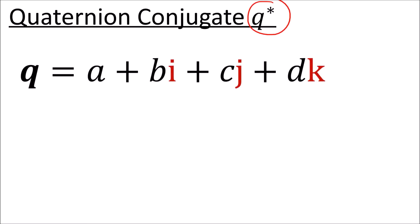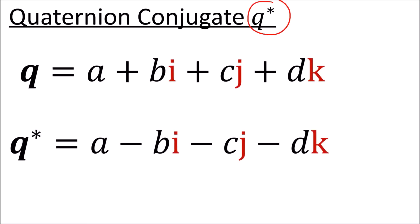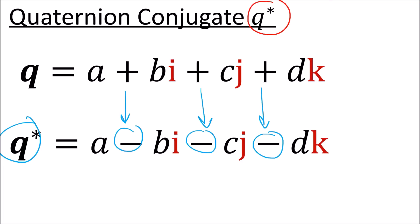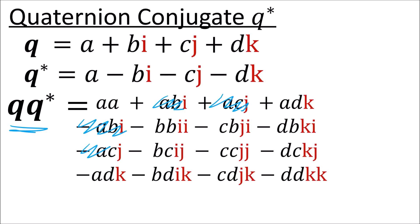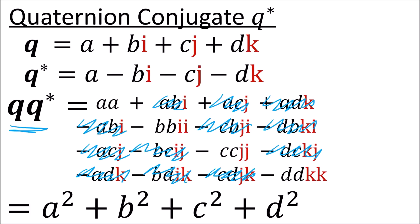I should also mention the idea of a quaternion's conjugate q*. Given some quaternion q, we get the conjugate q* by switching the signs of the imaginary units i, j, k. If we multiply q by q*, we get 16 terms where only the diagonal terms are non-zero. So we get a squared plus b squared plus c squared plus d squared, which is the squared length of the quaternion.